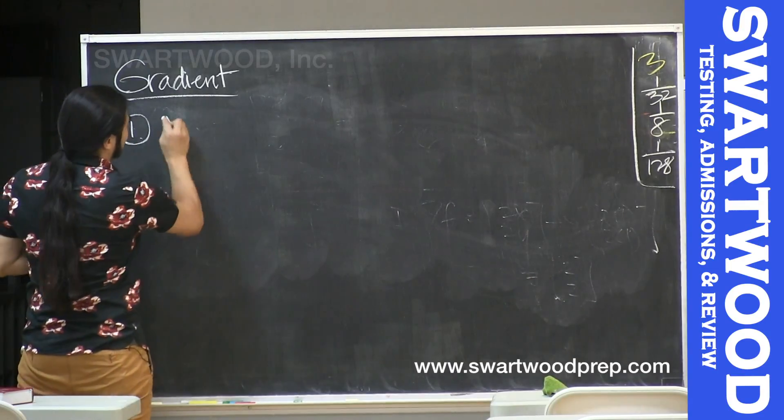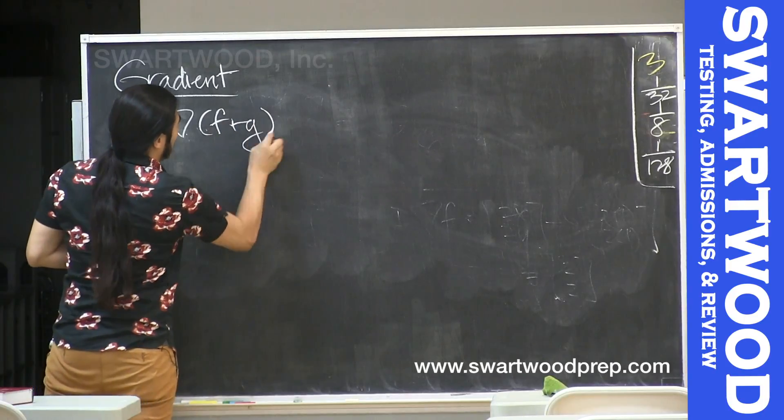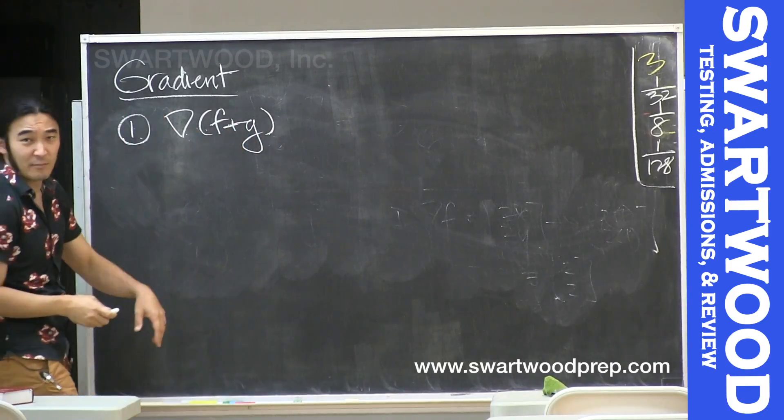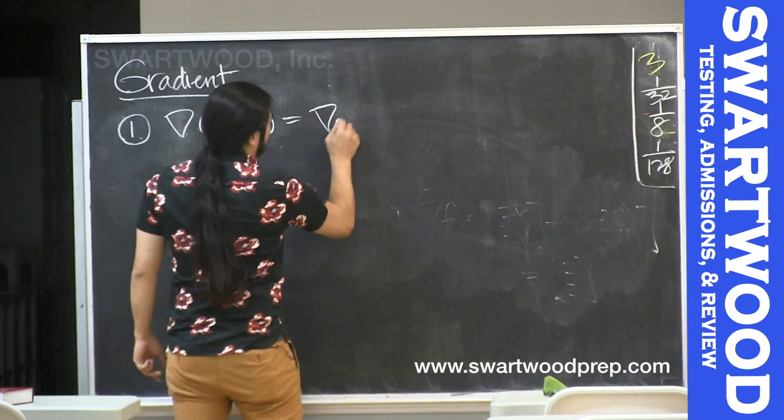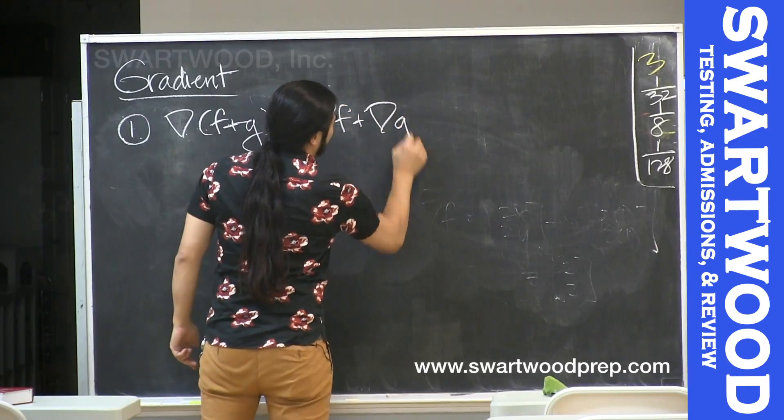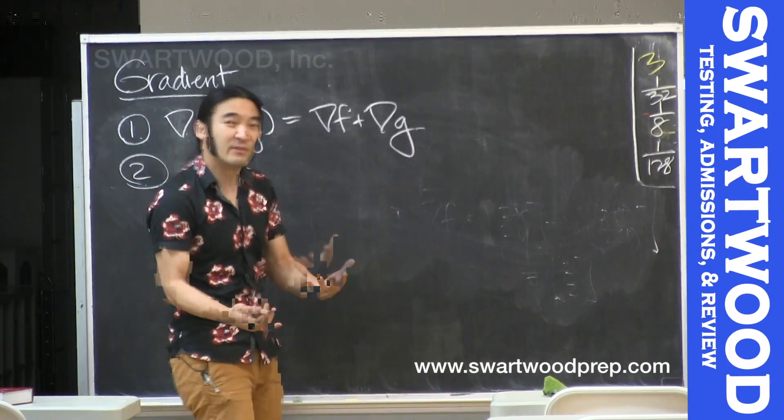Number one, let's say you have two functions, f and g, and you want the gradient of their sum. It's exactly what you expect. It's the gradient of the first guy plus the gradient of the second. And I'm going to take it for granted that we believe these rules.